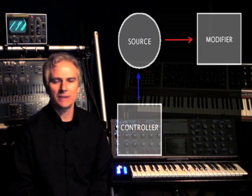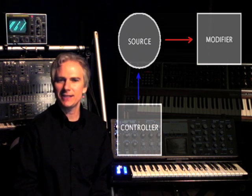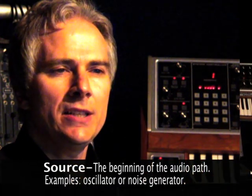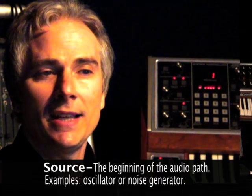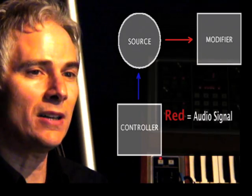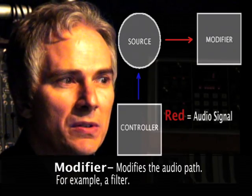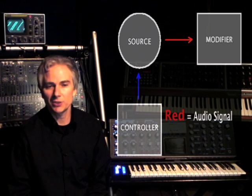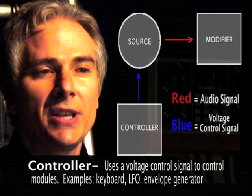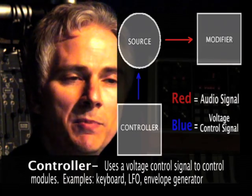We will be looking at all the various components of the synthesizer and how they're connected by those two types of signals. Looking at this diagram, you'll see a flow chart. All the various components of the synthesizer fall into one of these three categories: a source, a modifier, or a controller. A source is the beginning of the audio path — a good example is an oscillator or a noise generator. The red arrow is an audio signal; that audio signal reaches a modifier, which will somehow modify the audio path — a good example is a filter. Beneath the source, you see a controller. The blue arrow represents a control signal. The controller controls the source with a voltage control signal. Examples of a controller include a keyboard, a low-frequency oscillator, or an envelope generator.